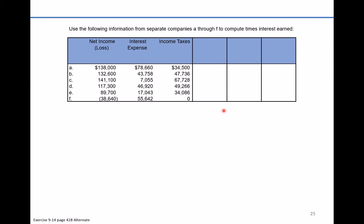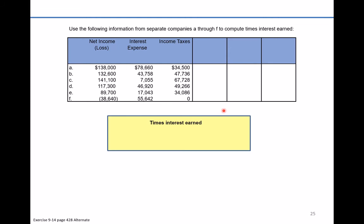It says use the following information from separate companies A through F to compute the times interest earned ratio. The times interest earned ratio is the income before interest and taxes — the pool of money the company has before it pays out interest and before it pays out taxes. We're looking at how many times over that pool of money can cover the company's interest expense. This ratio is a key ratio used by creditors to get some sense of a company's ability to pay debt going forward.